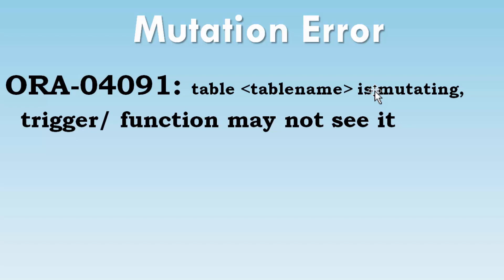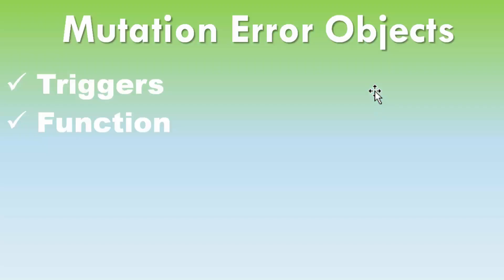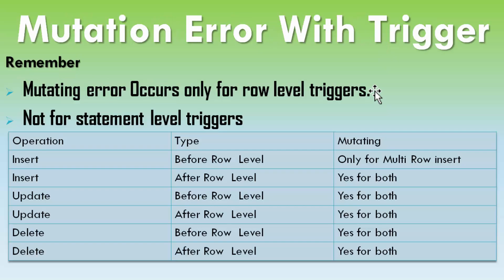Mutation error generally occurs on triggers and functions. Most developers think it happens with triggers only, but sometimes it happens with functions also. Mutation error occurs only for row-level triggers, not for statement-level triggers.